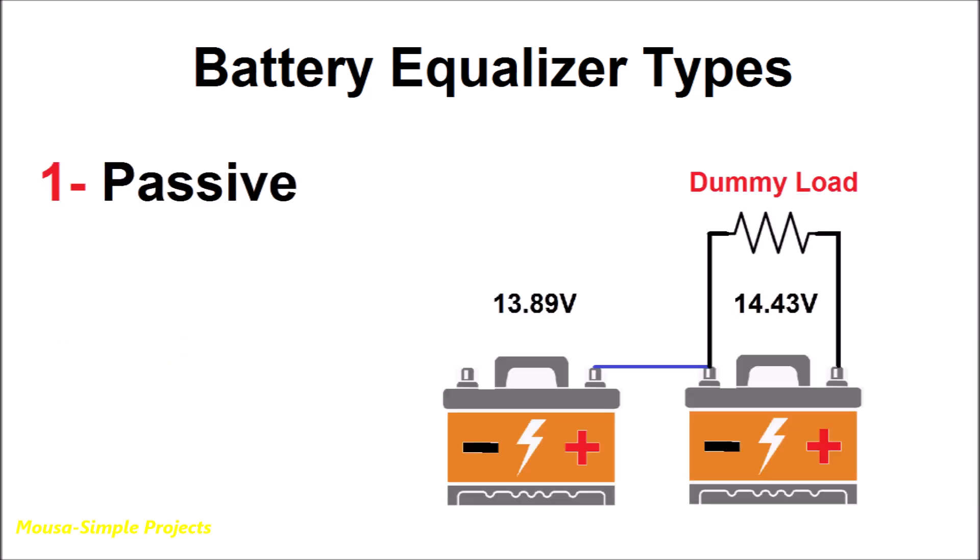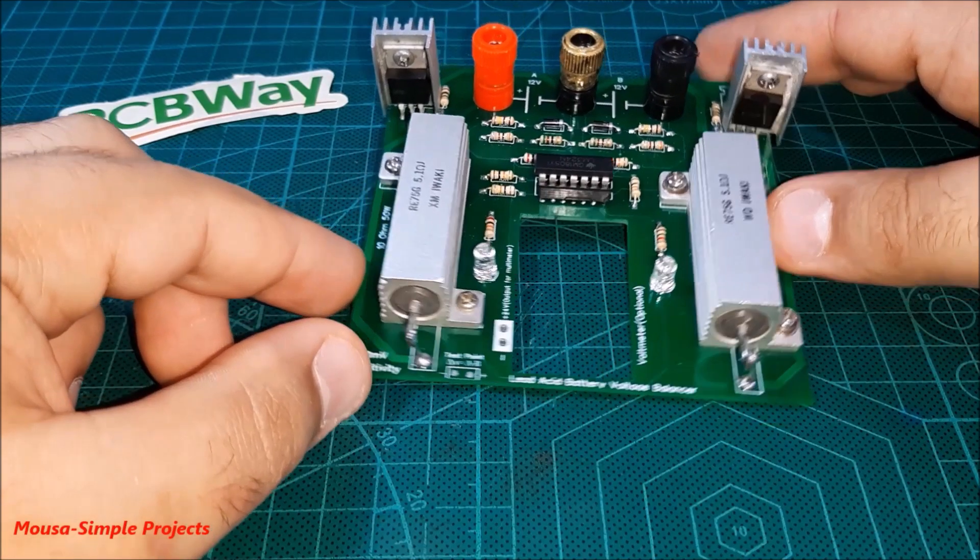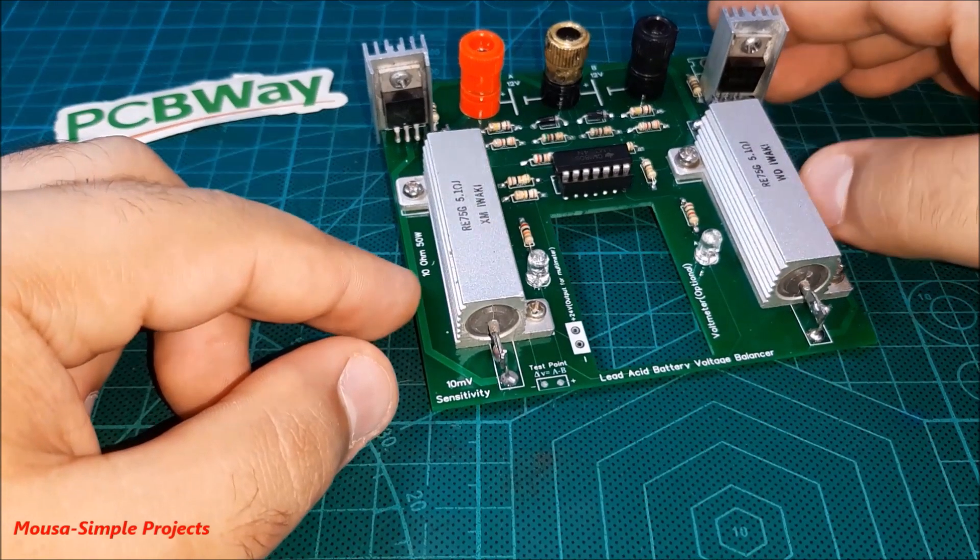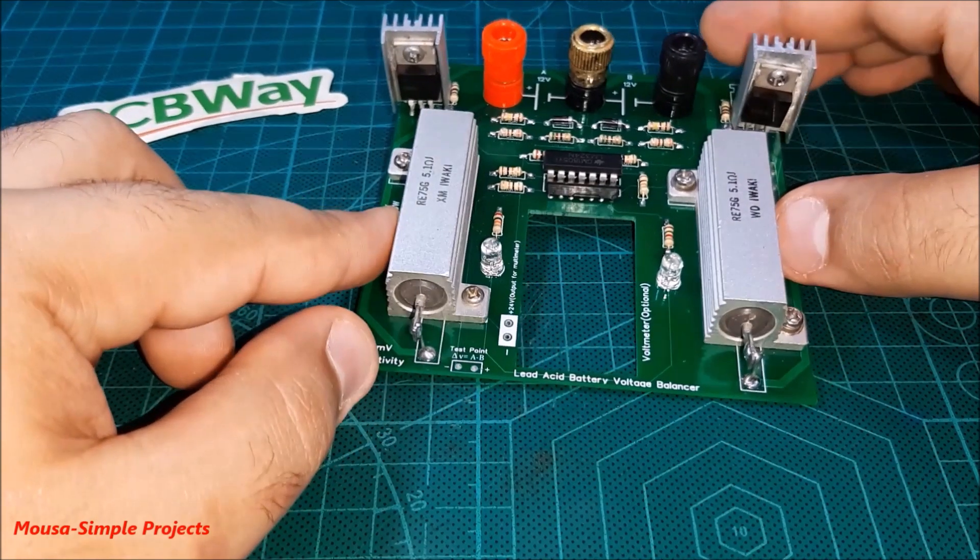The passive battery equalizer discharges the battery with higher voltage until the voltage of both batteries become exactly the same. Although it is simple and cheap, it wastes the energy as heat. I used this method in a previous video. You can find the link of that video below in the description.